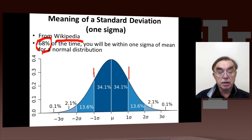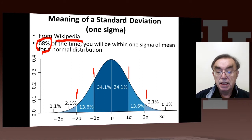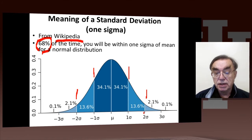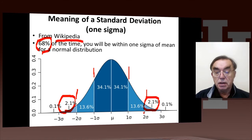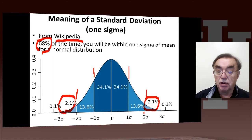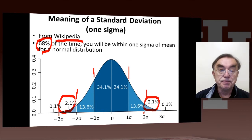If you want to do 2 sigma, then you have an additional 13.6% either side. And if you go between 2 sigma and 3 sigma, that's 2.1%, so if it's either side, it's 4.2%. And then there's a pretty small probability of being 3 sigma: 0.1% either way.